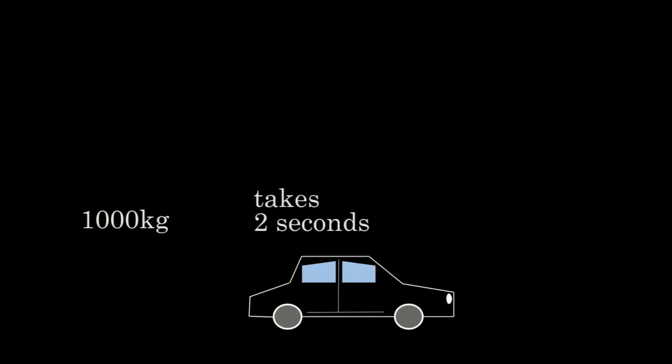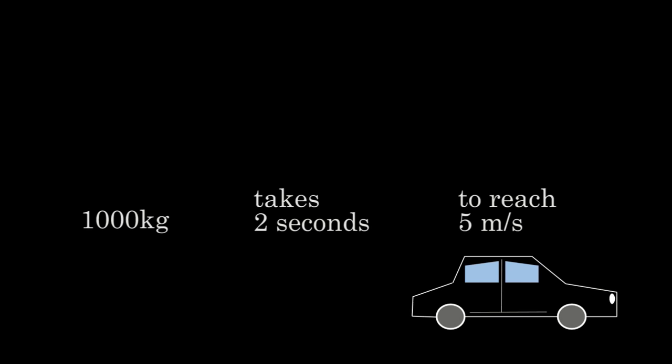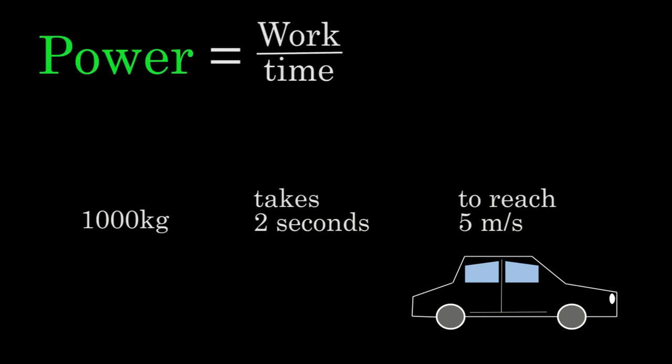Alright, let's look at another example. Let's say a 1,000 kilogram car starts from rest and takes 2 seconds to reach a speed of 5 meters per second. We can find the power output by the engine by taking the work done on the car divided by the time it took to do that work.